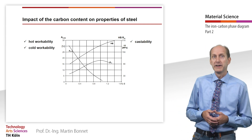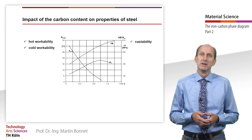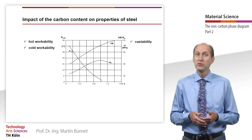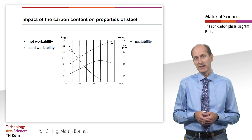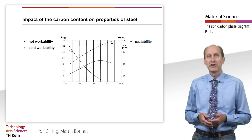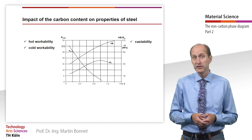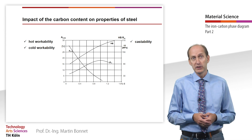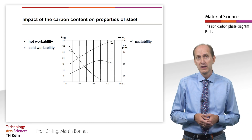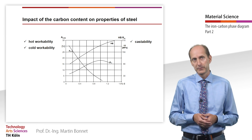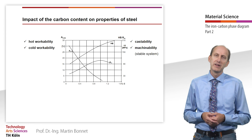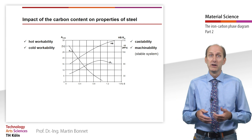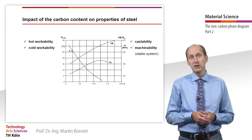In general, soft ferrite is very ductile. However, the percentage of cementite, which increases with an increase in carbon content, reduces elongation at break and necking. Consequently, the force and work required for cold working increases with the carbon content. Above 0.8% carbon content, considerable cold working is no longer possible because of the brittle interface cementite. As the percentage of cementite increases, so does the cutting force required and the abrasive wear of the cutting edge during material machining.